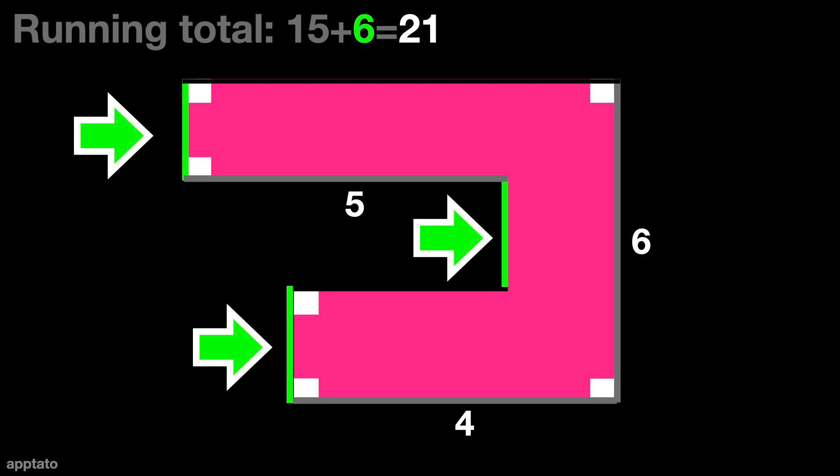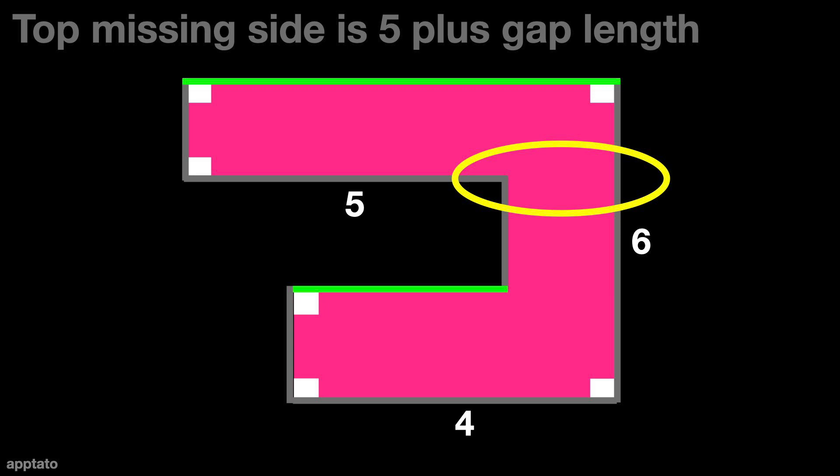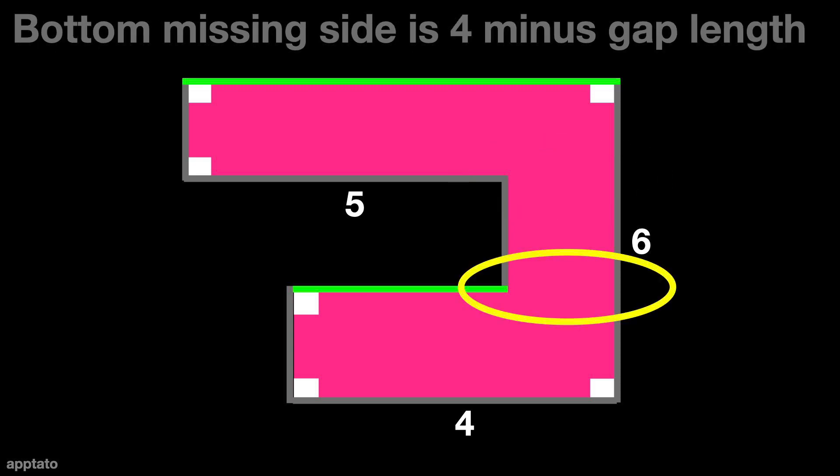Now for the tricky part, we have two sides that are unknown in length. The top side can be represented by 5 plus the gap length. And the bottom side can be represented by 4 minus the gap length.